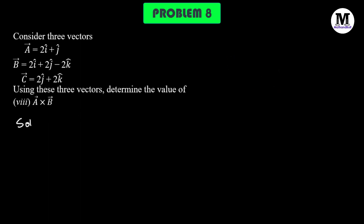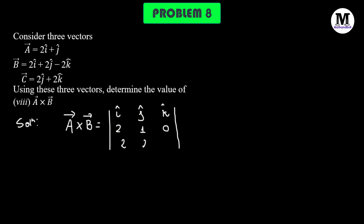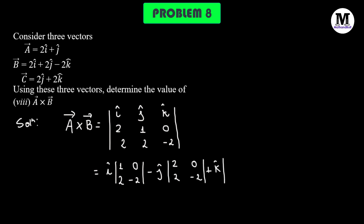Problem number 8: we need to determine the value of the cross product A cross B. A vector cross B vector is simply the determinant with i cap, j cap, k cap in the first row. In the second row we have the components of vector A: 2, 1, 0. And in the third row we have vector B: 2, 2, negative 2. Expanding the determinant along the first row, we have i cap multiplied by the determinant of 1, 0, 2, negative 2; minus j cap with the determinant of 2, 0, 2, negative 2; plus k cap with the determinant of 2, 1, 2, 2. Solving this, we get negative 2i cap plus 4j cap plus 2k cap.